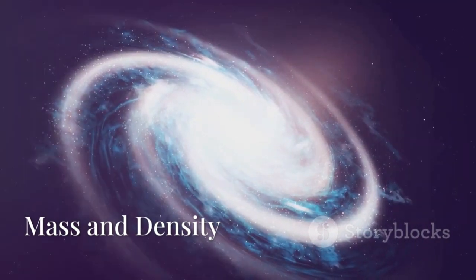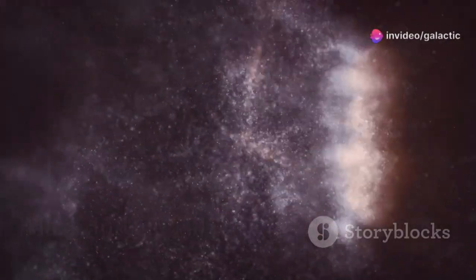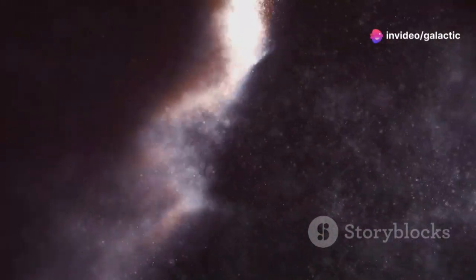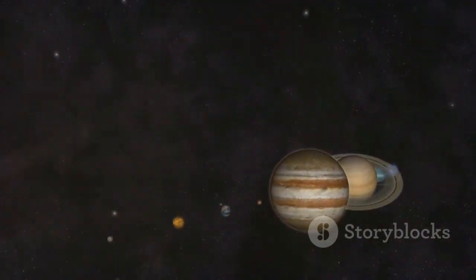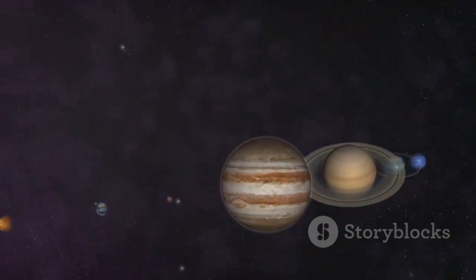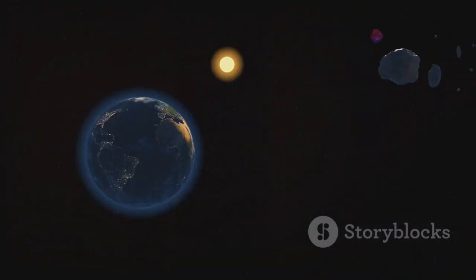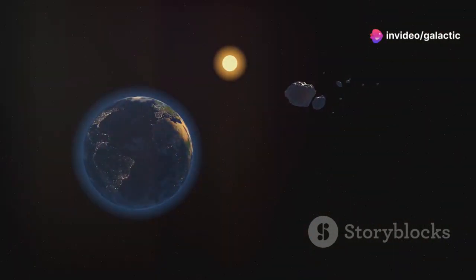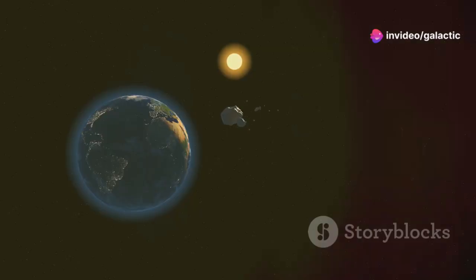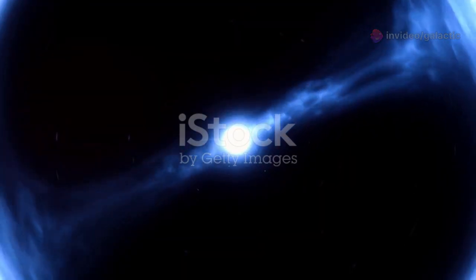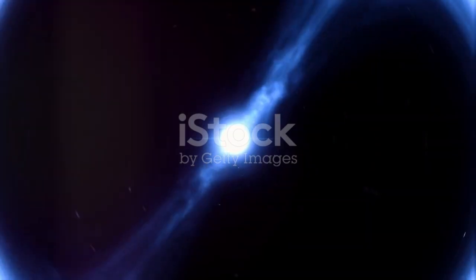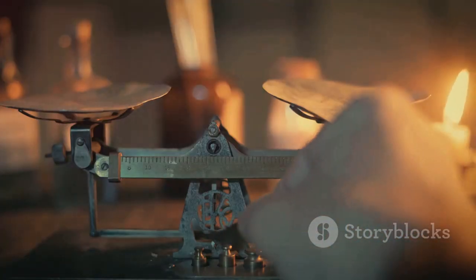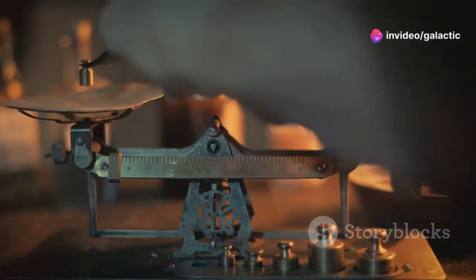While its rotational speed is impressive, PSR J0952-0607 is also a heavyweight champion in the universe. Despite being only about 20 kilometers across, roughly the size of a city, this pulsar packs a mass greater than our Sun. Imagine squeezing all the matter of our Sun, which could hold over a million Earths, into a space the size of Manhattan. That's the incredible density of PSR J0952-0607. A single teaspoonful of its material would weigh billions of tons on Earth.